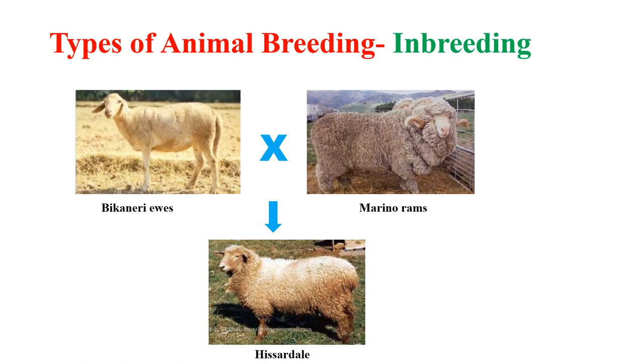There are two types of animal breeding, namely inbreeding and outbreeding. First, let us see what is inbreeding.